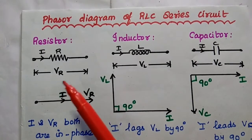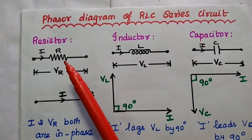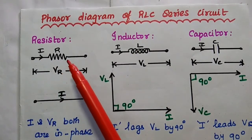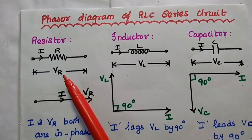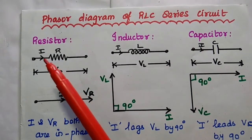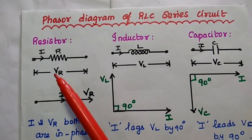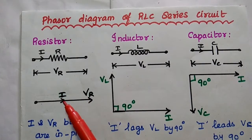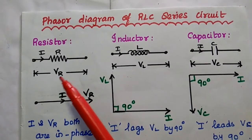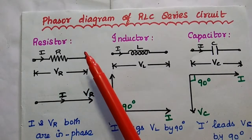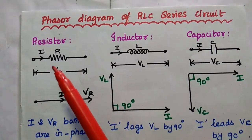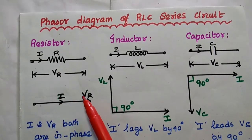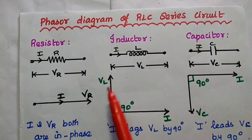First, the resistor-only circuit. If current flows through the resistor, the voltage drop across it is Vr. Here, I and Vr are both directly proportional, so these two values are in phase. If voltage increases, current also increases; if voltage is reduced, current is also reduced. Both are directly proportional, so both are in-phase quantities.